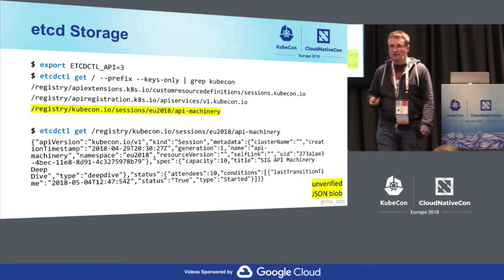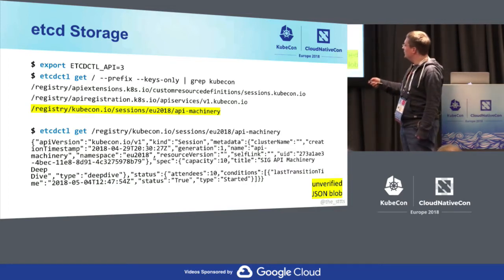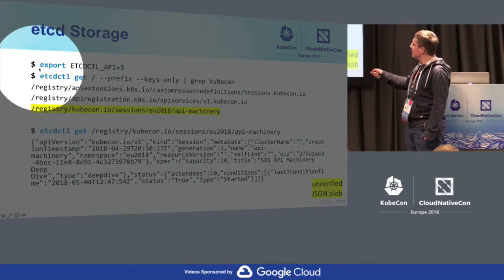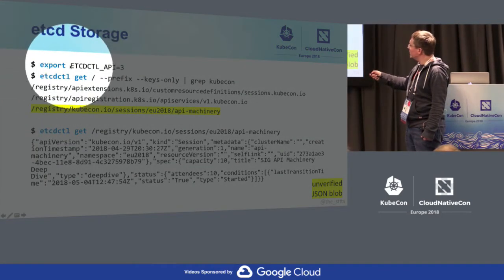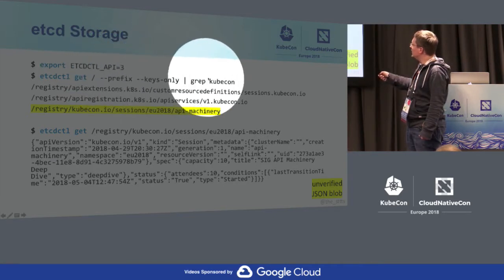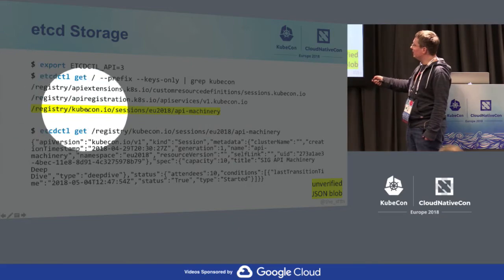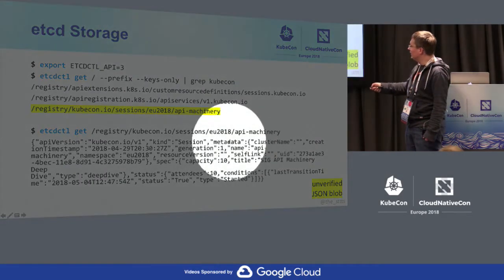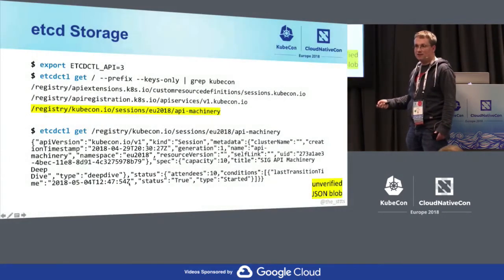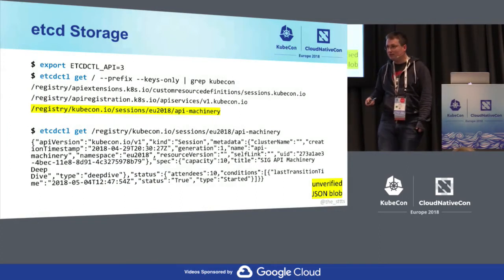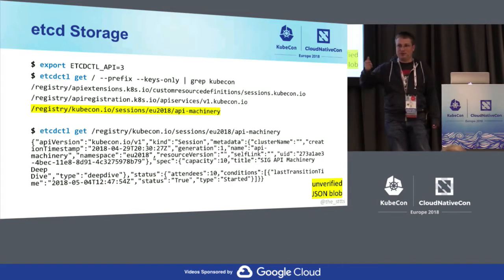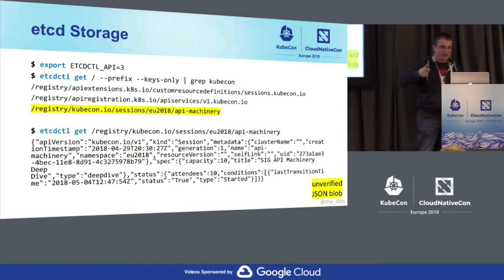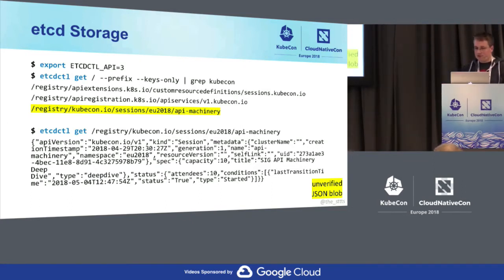Deep dive — let's look at what this really is in etcd. It's nothing surprising. If you define a CRD and look in your etcd — I did this here on the slide — using etcdctl with version 3, asking for all keys and grepping for KubeCon, I see exactly my created object. If you look into the value of that key-value pair, it's just the JSON blob — basically what you posted to the API server. And I talked about pruning: everything is really put into etcd, there's hardly any filtering going on. It's an unverified JSON blob.